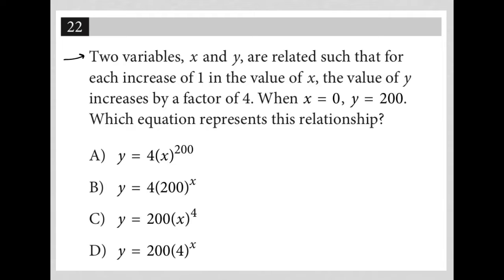This question says two variables, x and y, are related such that for each increase of 1 in the value of x, so I'm going to write that down as x goes up by 1 unit, the value of y increases by a factor of 4. We'd have y going up by 4 units. So maybe some of you understand this structure here. Not important if you don't, but basically this is that x relates to y in this way.